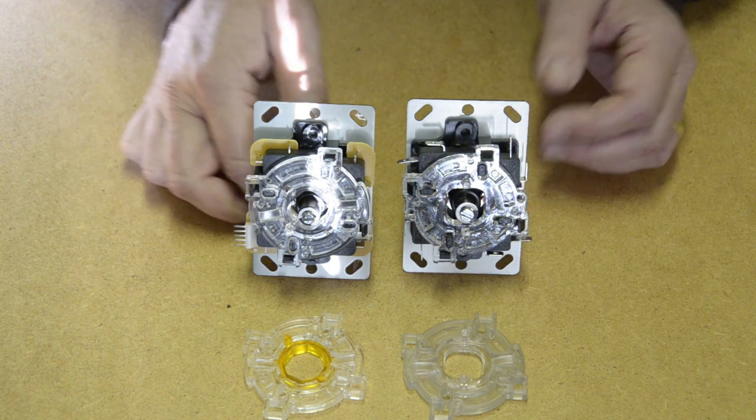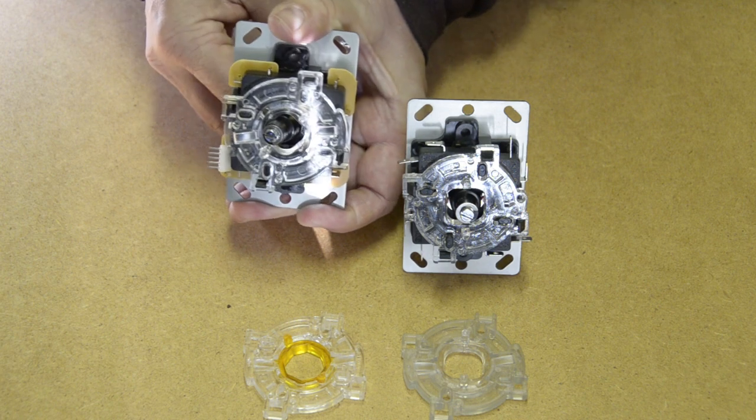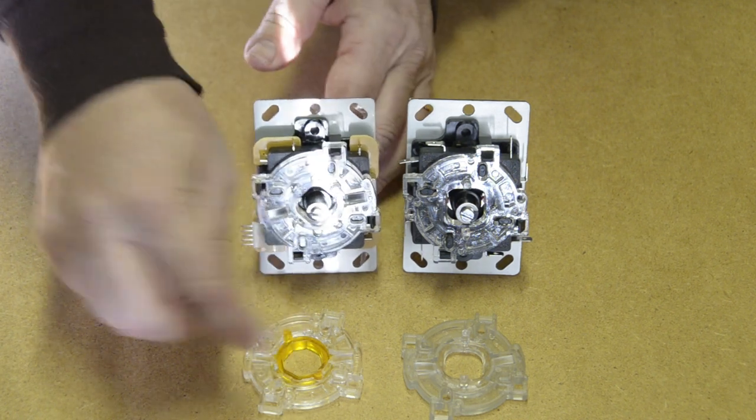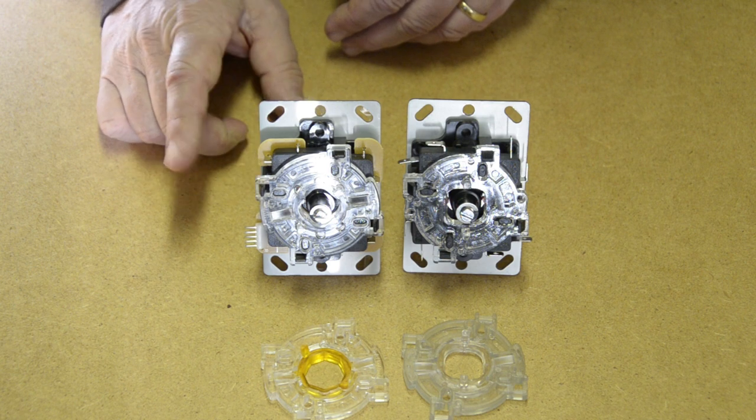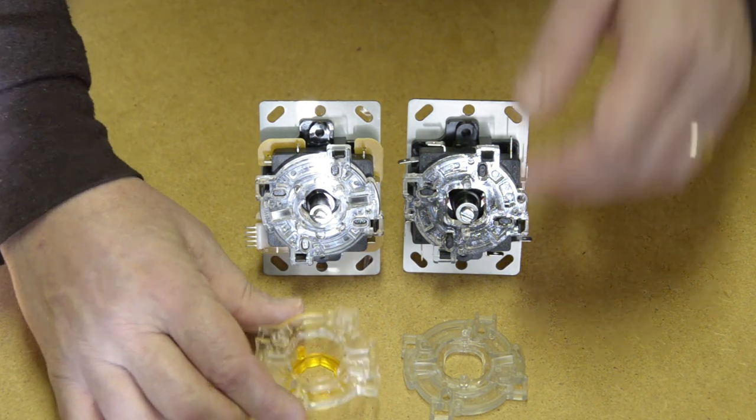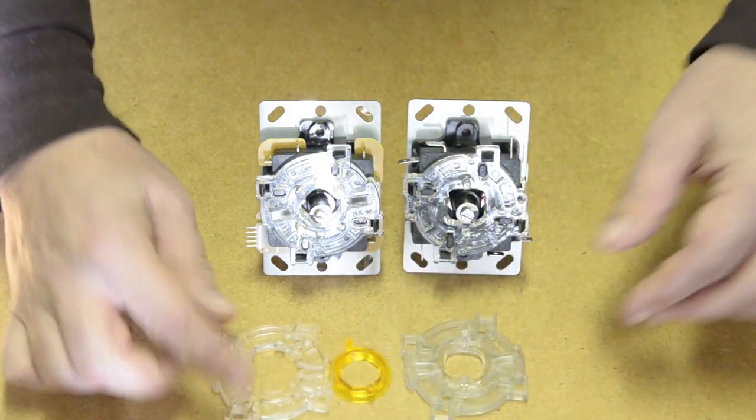Most arcade games that rely on up, down, left, and right also do well with an octagonal gate. Now Sanwa allows you to swap out the gate in their restrictor plate. You can remove the gate and put in a different shape one.